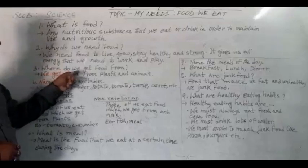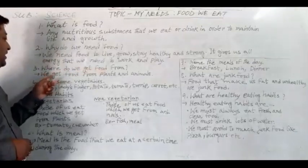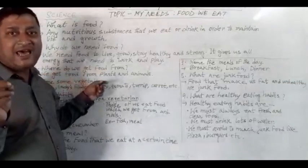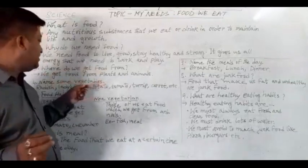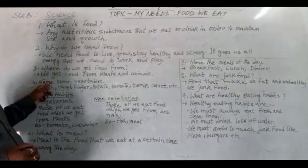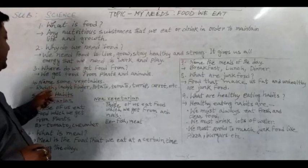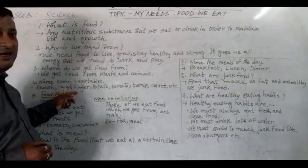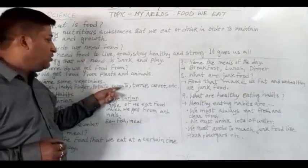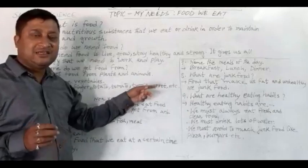Where do we get food from? We get food from plants and animals. Name some vegetables: radish, lady's finger, potato, tomato, turnip, carrot, etc.